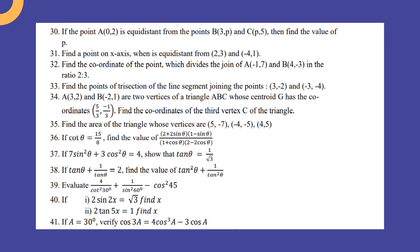Find a point on x-axis which is equidistant from (2, 3) and (-4, 1). Find the coordinate of the point which divides the join of A(-1, 7) and B(4, 3) in the ratio 2:3.